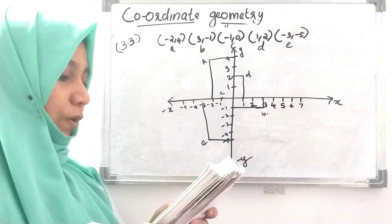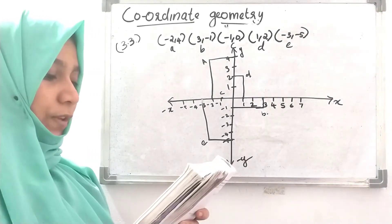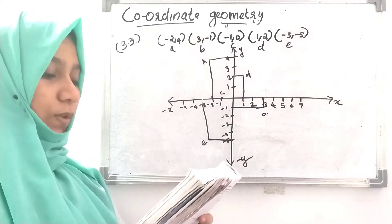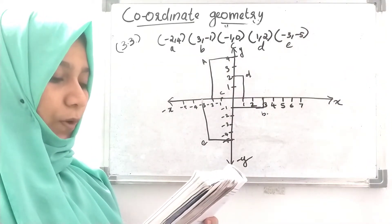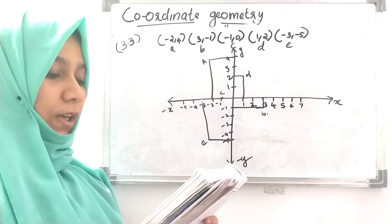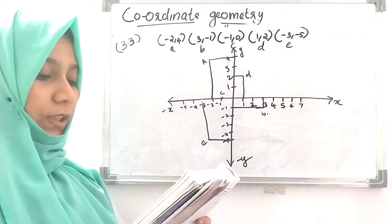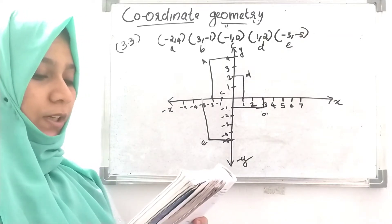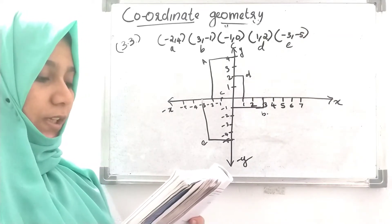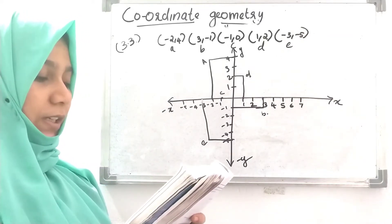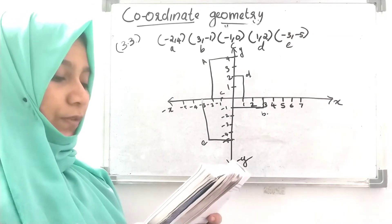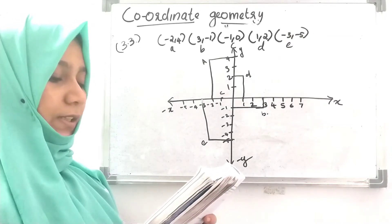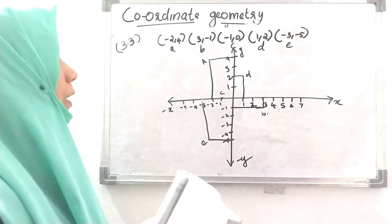In which quadrant or on which axis do each of the following points lie: minus 2 comma 4, 3 comma minus 1, minus 1 comma 0, 1 comma 2, minus 3 comma minus 5? Verify your answer.